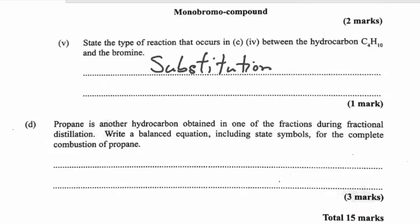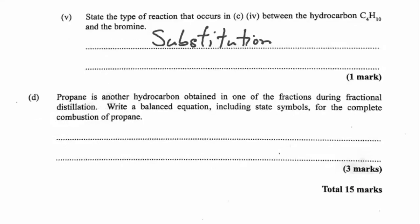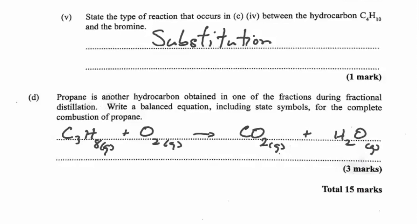Write a balanced equation including state symbols for the complete combustion of propane (C₃H₈). Propane is a gas: C₃H₈(g) + 5O₂(g) → 3CO₂(g) + 4H₂O(g). We balance in the order C, H, then O. We need 3 for carbon, 4 for water to get 8 hydrogens, then counting 6 + 4 = 10 oxygen atoms total, so we need 5 O₂.